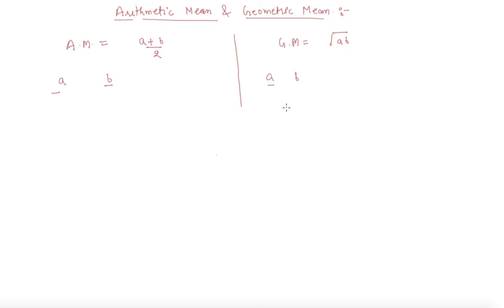And if we are given the numbers A, AR up to AR power n minus 1, the geometric mean for this will be A times (B/A) power n upon (n+1), where B/A will be R in these terms. In this way, you need to find out the geometric means.